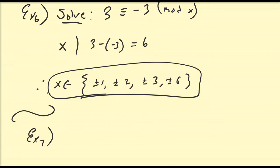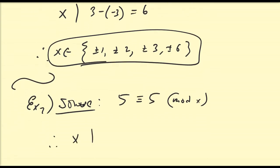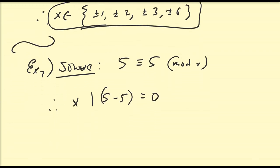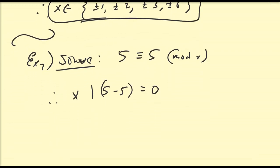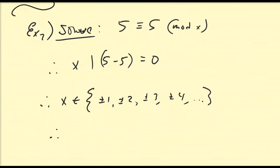Here's an interesting problem: solve 5 is congruent to 5 modulo x. That means x must divide evenly into 5 minus 5, which is 0. What numbers divide evenly into 0? That's going to be all non-zero integers. So x must belong to the set of plus or minus 1, plus or minus 2, plus or minus 3, plus or minus 4, and so on — or more compactly, x is the set of all integers except for 0.